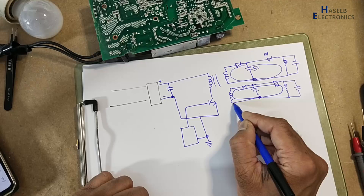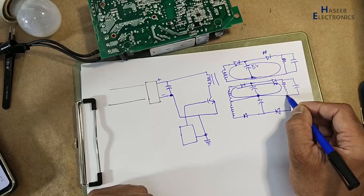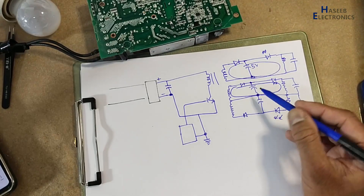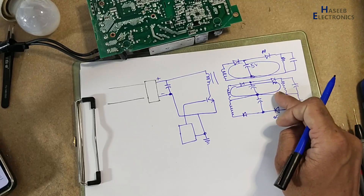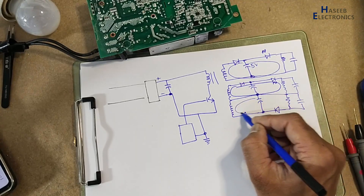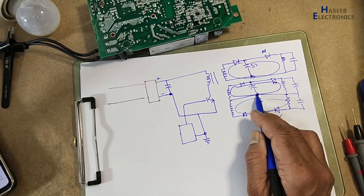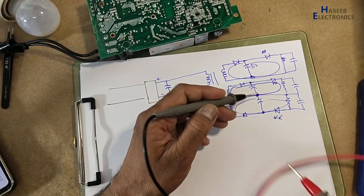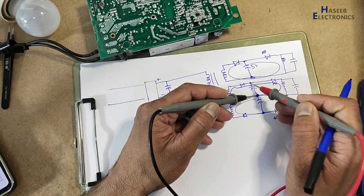Suppose this is a center-tap winding. We have another condition: we can see positive, negative, positive, negative — now there are two power supplies, a positive supply and a negative supply. In this case, the common of these two capacitors will be selected as the reference point, so we will measure voltage here and here.